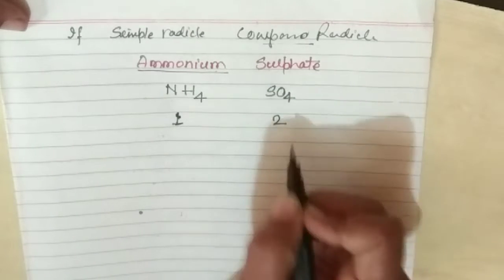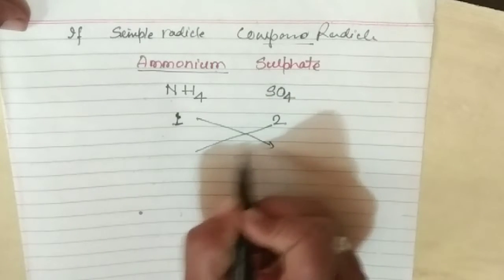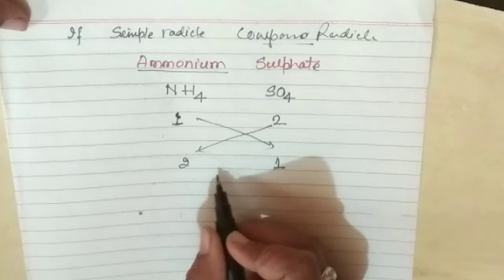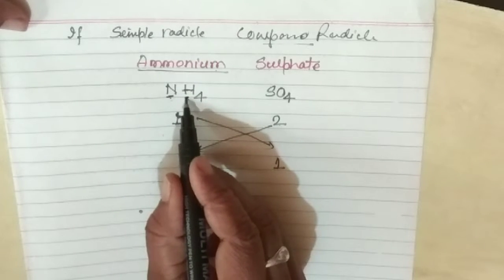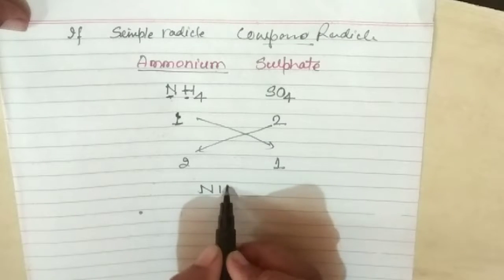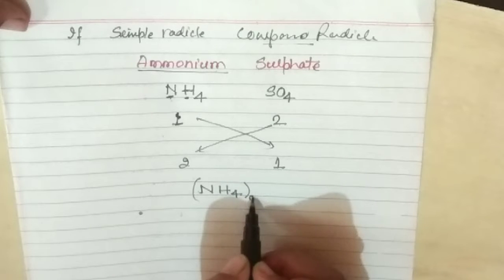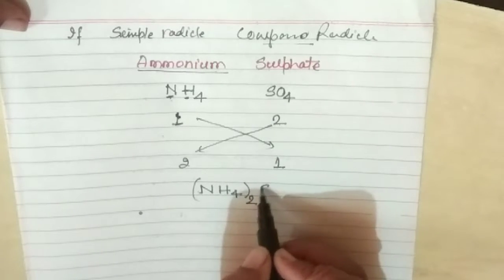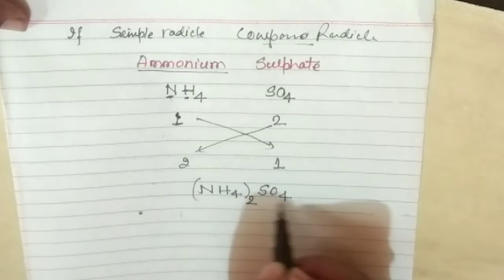Since NH₄ is a compound radical — it contains nitrogen and 4 hydrogen atoms — we bracket it and write 2 outside. SO₄ is only 1, so no bracket is needed. The result is (NH₄)₂SO₄. This is the molecular formula of Ammonium Sulfate.